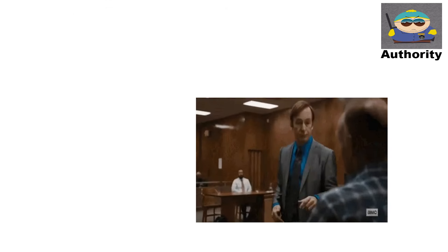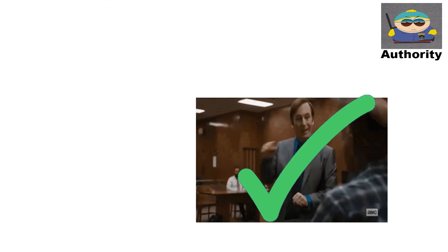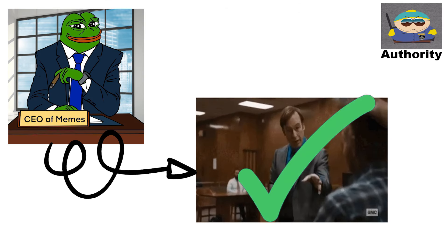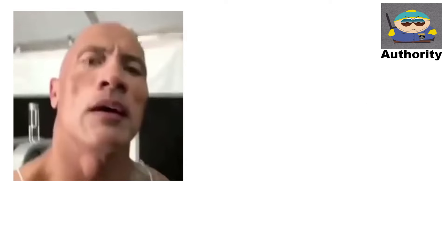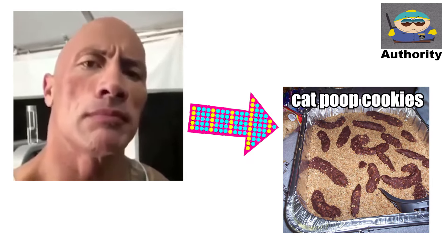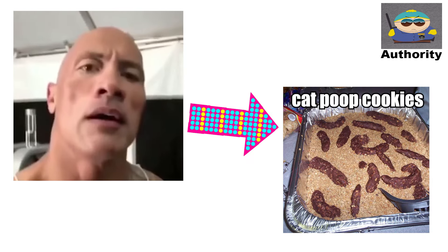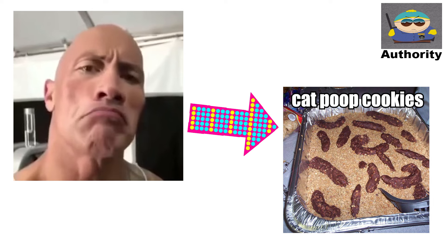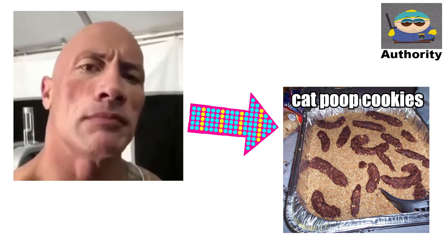Appeal to authority. The appeal to authority fallacy argues that a claim must be true because an authority figure says it is. For example, a famous actor says this diet is the best, so it must be effective — relies on the actor's fame rather than any real evidence.